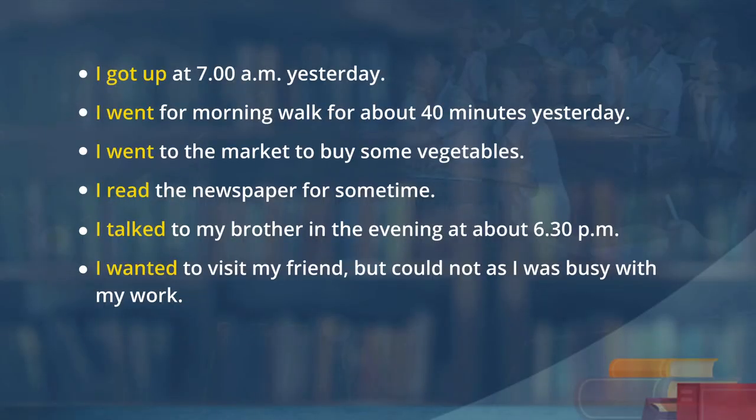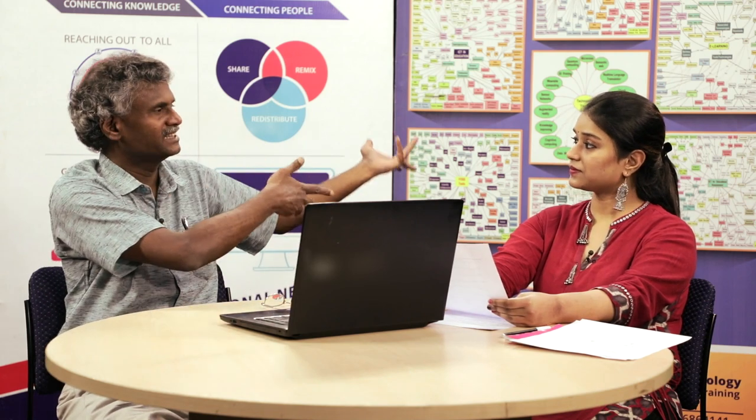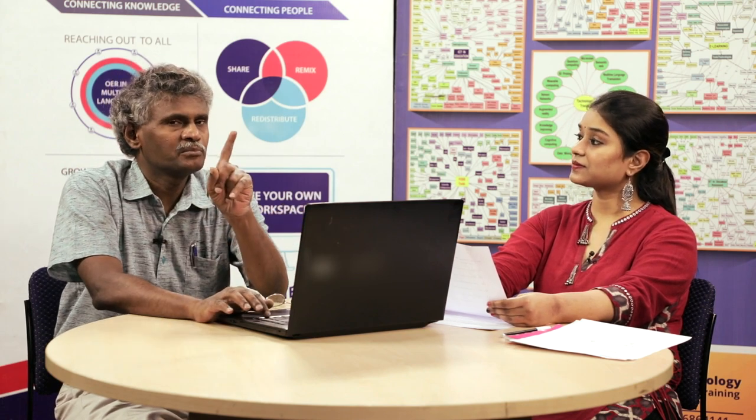Last year, I visited Mumbai. It was a great experience. I was the captain of our school hockey team when I was in class 11th. I lived in Bengaluru during 2002 to 2004. When did all these actions take place? They have taken place in the past. So, what kind of verbs are we using? Got up. Went. Read. Talked. Wanted. Visited. Was. Lived. These events took place in the past — long past or very long past, meaning 2002, yesterday.